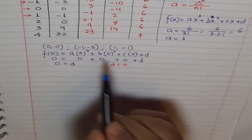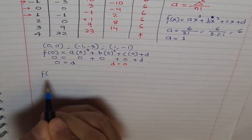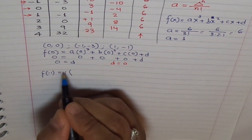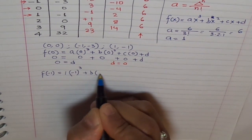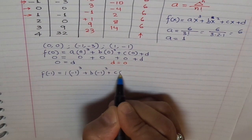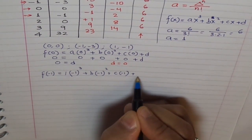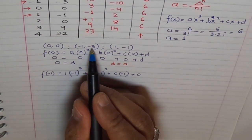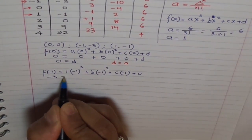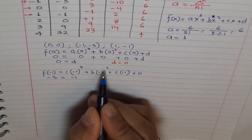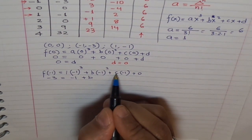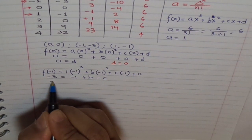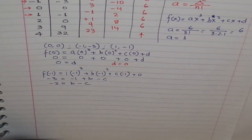Next, let's take the point minus 1 and minus 3. F(−1) equals 1 times (−1)³ plus B times (−1)² plus C times (−1) plus 0. F(−1) is minus 3. Minus 1 cubed is minus 1, minus 1 squared is plus 1, so we get minus 3 equals minus 1 plus B minus C. Bringing minus 1 to this side, minus 2 equals B minus C. Let's call this equation 1.